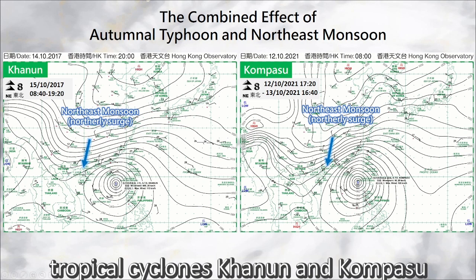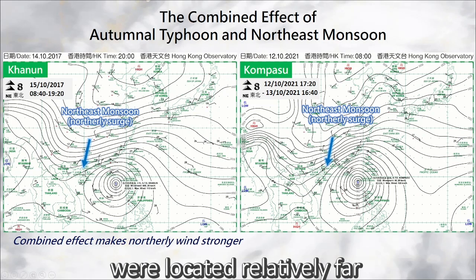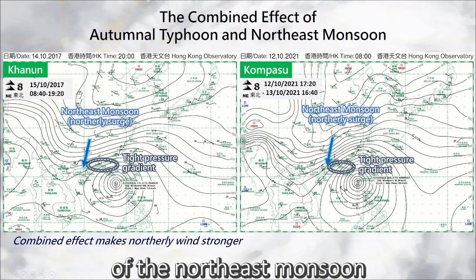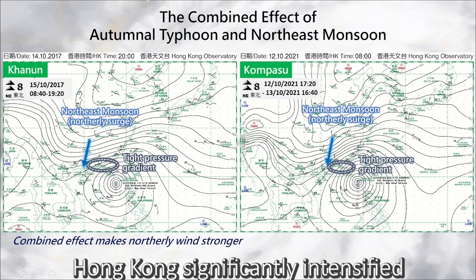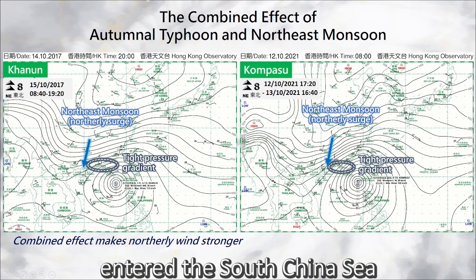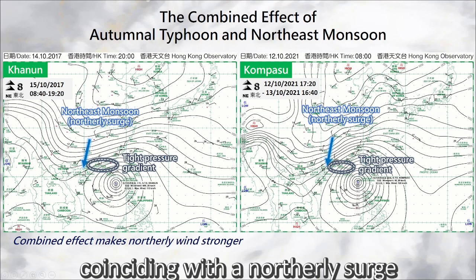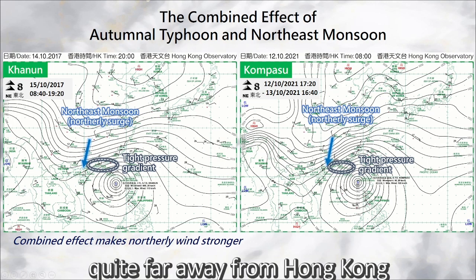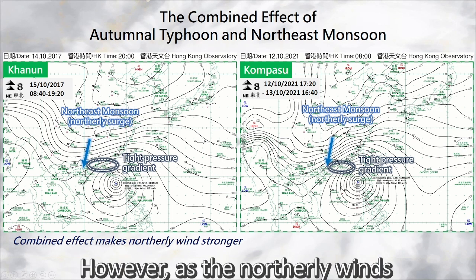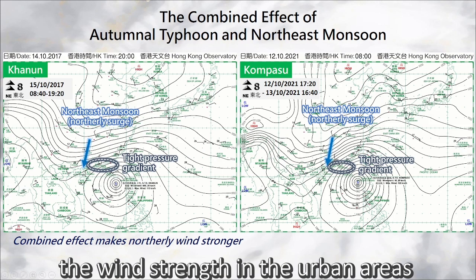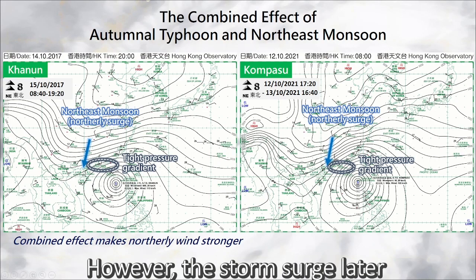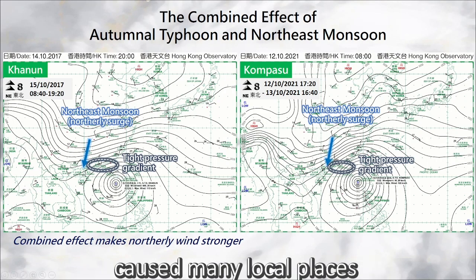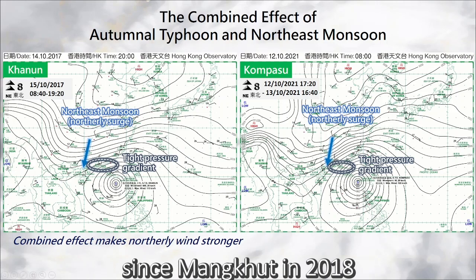In these figures, tropical cyclones Kanun and Kompasu were located relatively far to the southeast of Hong Kong. Under the combined effect of the northeast monsoon, northerly winds in the regions near Hong Kong significantly intensified, especially when Kompasu entered the South China Sea, coinciding with a northerly surge that resulted in the occurrence of strong winds over the territory even though its distance was quite far away. However, as the northerly winds were sheltered by the terrain, the wind strength in the urban areas hadn't yet intensified significantly. The storm surge later triggered by Kompasu, superimposed on the high tide, caused many local places to record the highest sea levels since Mangkut in 2018.